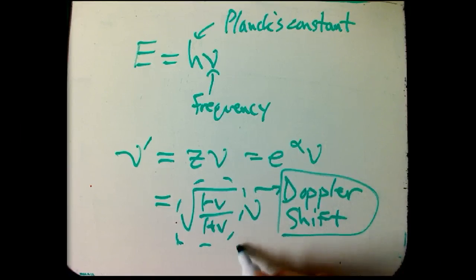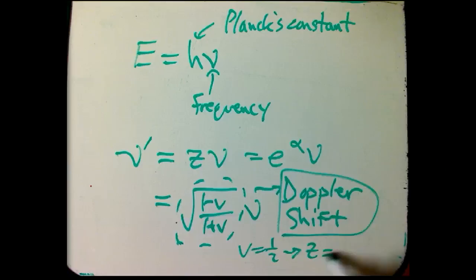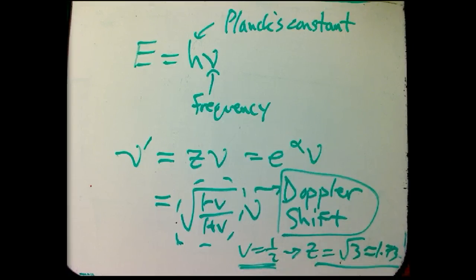So for example, if V equals 1/2, we've already seen the Doppler shift factor, it was root 3, or about 1.73. So if something's coming towards you with relative velocity half the speed of light, you're going to see the photons coming out of it shifted by a factor of, blue shifted by a factor of root 3. The frequency is going to go up by a factor of root 3. If they're going away,